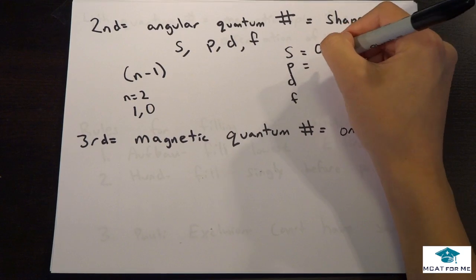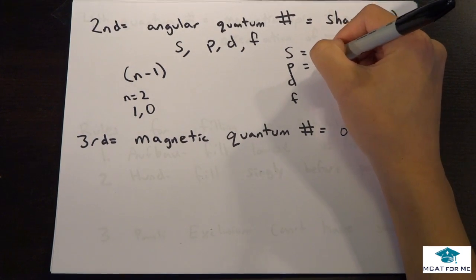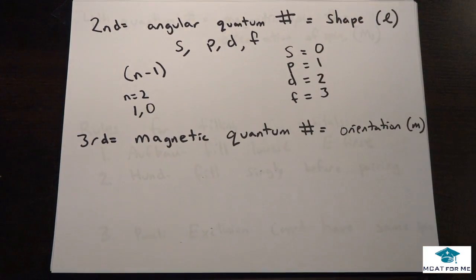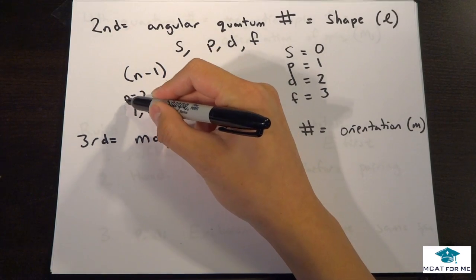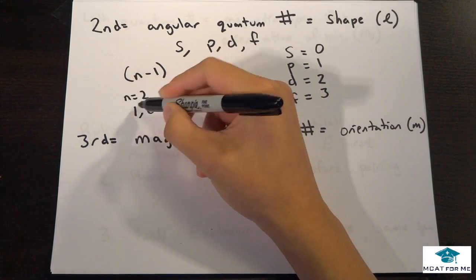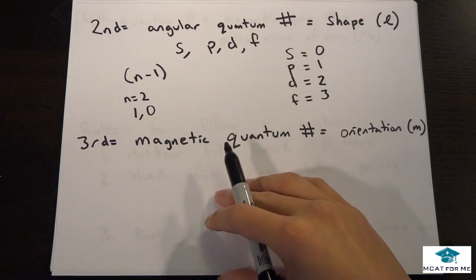So S has an angular quantum number of 0, P is 1, D is 2, and F is 3. So all this is saying is that the possible angular quantum numbers within the second period, the second principal quantum number, are either S and P.